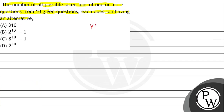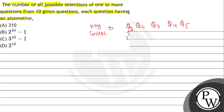Let us take an example. If there are five questions in an examination — Q1, Q2, Q3, Q4, and Q5 — and you have to find the number of ways to attempt these questions, then for Q1 you have two options: either you can do this question or you can leave it. Similarly, for Q2, Q3, Q4, and Q5, everyone has two options — either to do it or to leave it.